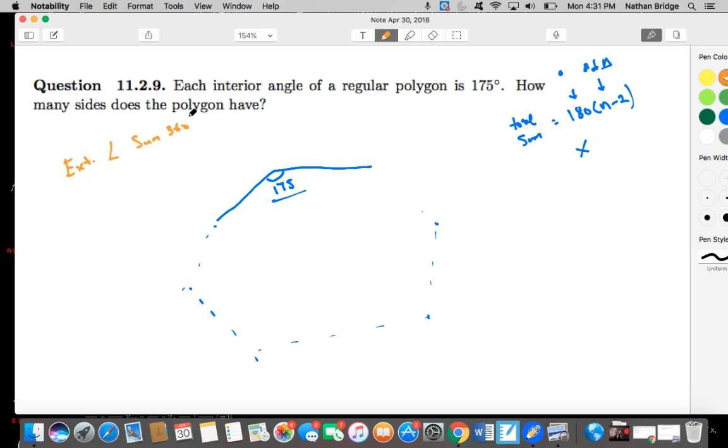Let's see if this can help us. If this is 175 and we extend this out to create this exterior angle, and we know that these two angles, the interior and the exterior, form a total measurement of 180 degrees because it's a straight line, then this exterior angle must be 5.